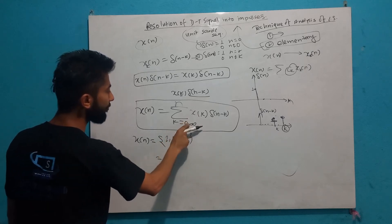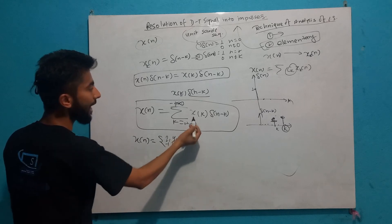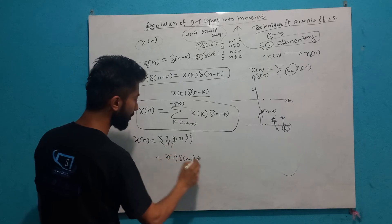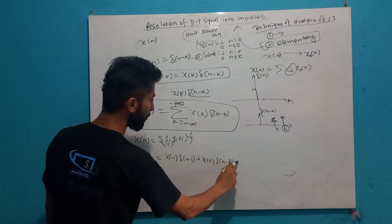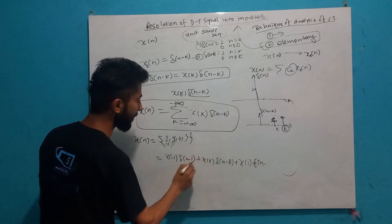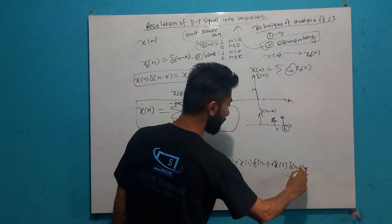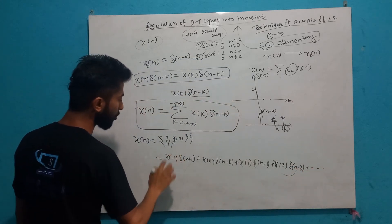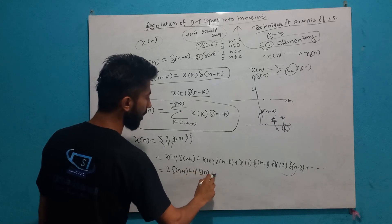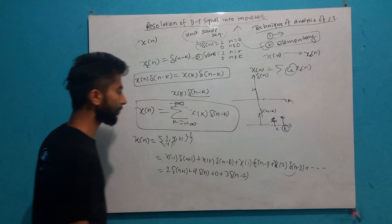The unit sample is equal to the unit. At the end, we can see that x[n] equals the sum: ... plus x[-1]·del[n+1] plus x[0]·del[n] plus x[1]·del[n-1] plus x[2]·del[n-2] plus dot dot dot. So x[-1], x[0], x[1], x[2] with their respective delayed impulses — correct?